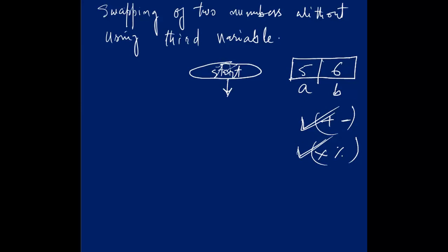I will not use a third variable here. I will sum up 5 plus 6, that is equal to 11. I will write A is equal to A plus B. So this A will be replaced by A plus B. What is A plus B? 5 plus 6, that will be equal to 11.